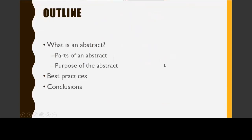My outline is: I'm going to start with what is an abstract — and it seems obvious, but I think it's important to really talk through what parts of an abstract are and what it's supposed to accomplish — so the parts and the purpose of it. And I'm going to go through some best practices to help you optimize your chances of success when writing your abstract.